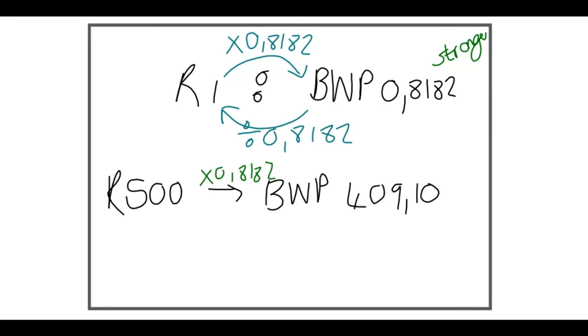And then, in another example, let's say I am now in Botswana, and there I have Pula, that's 2,200. And, I want to go to South Africa, convert it to Rand. What am I going to do? I am going to divide by 0,8182. If I divide, I'll get an answer of 2,688,83.